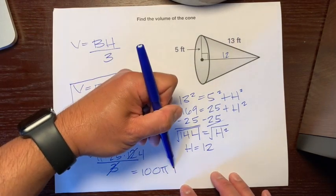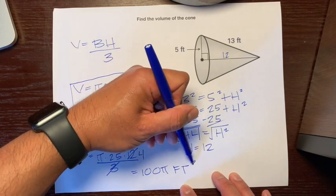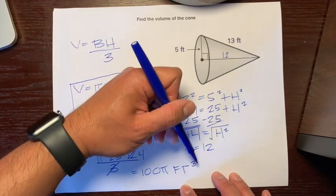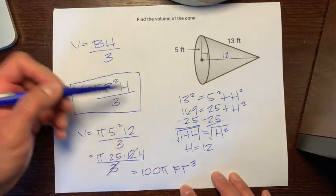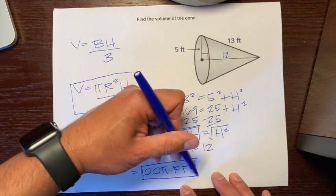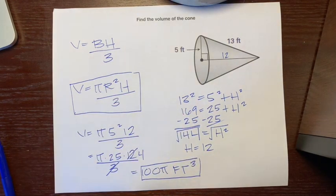That makes our multiplication a little easier. So 25 times 4 times pi is equal to 100 pi. Don't forget the pi. Feet cubed. And remember, it's cubed because it's the number of cubes that fit inside. And there's that 3 again. And that's how to find the volume of a cone.